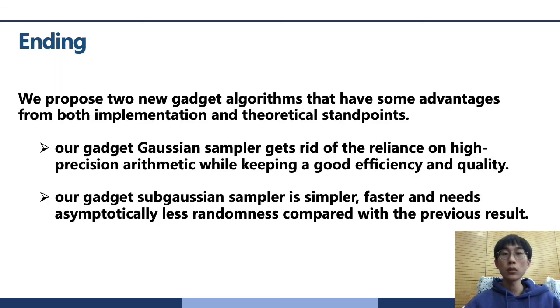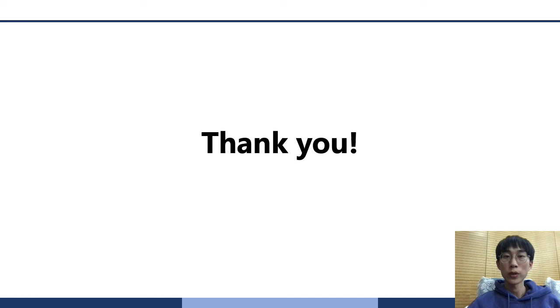All in all, we proposed two new gadget algorithms that have some advantage from both implementation and theoretical standpoint. Our gadget Gaussian sampler gets rid of the reliance on high precision arithmetic while keeping a good efficiency and quality. And our gadget sub-Gaussian sampler is simpler, faster, and needs asymptotically less randomness compared with the previous result. Thank you for listening to my presentation.